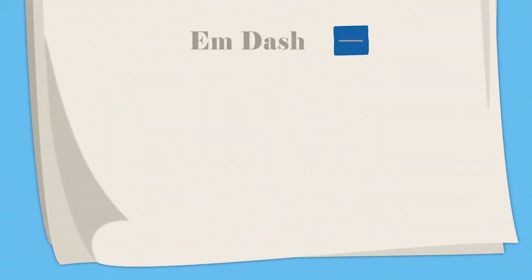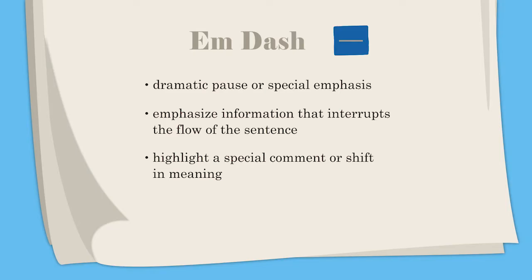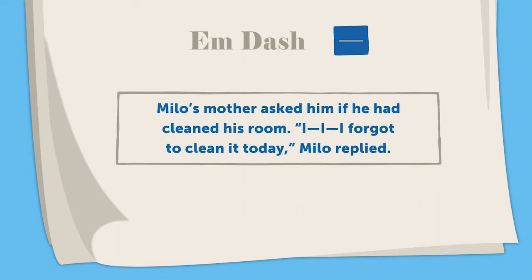Em dashes are a type of dash reserved for the highest level of interruption. Em dashes are used to create a dramatic pause or special emphasis. They emphasize information that interrupts the flow of the sentence. Em dashes also highlight a special comment or shift in meaning. Additionally, em dashes can be used in dialogue to show hesitation. For example: Milo's mother asked him if he had cleaned his room. "I — I — I forgot to clean it today," Milo replied. Em dashes are used here to show Milo's hesitation when speaking to his mother.